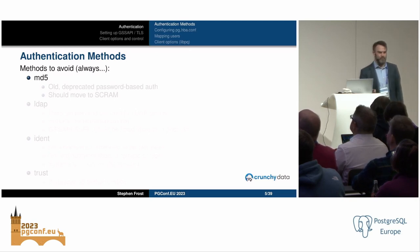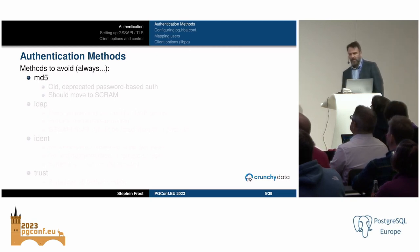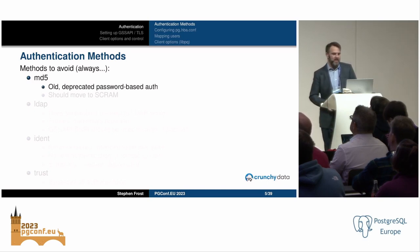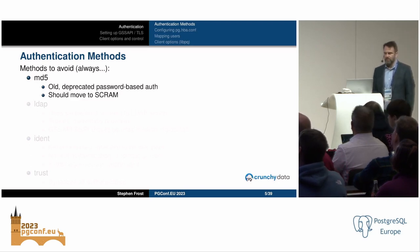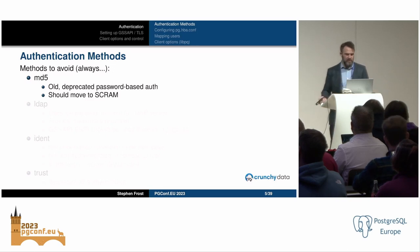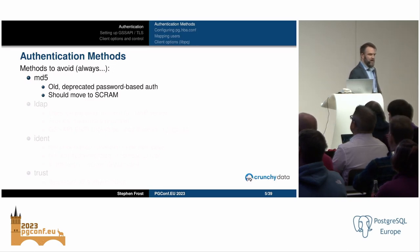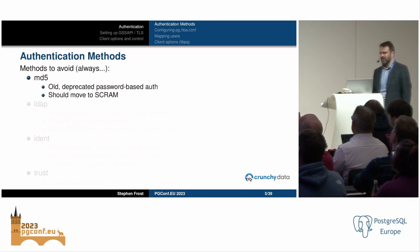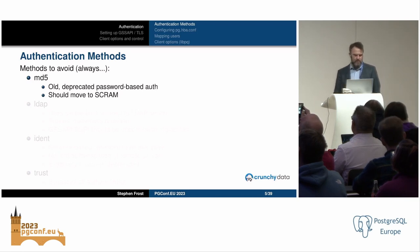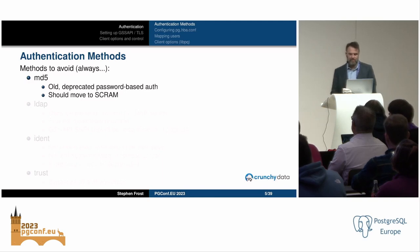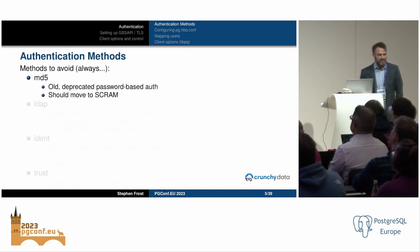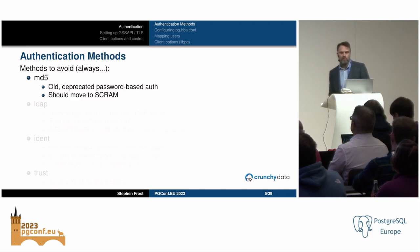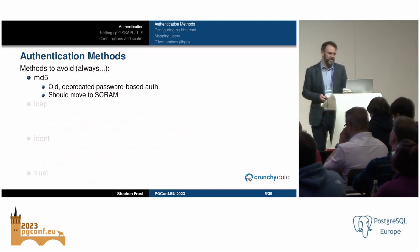Methods you should strongly avoid: MD5 is the biggest one — it's old, deprecated, and known to have many issues as a hashing algorithm. You should just move to SCRAM, which is now widely supported in all client libraries. MD5 also suffers from pass-the-hash, meaning you don't actually need the password — all you need is the hash to authenticate against the Postgres server.